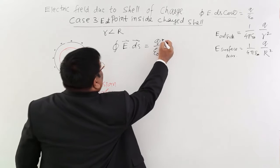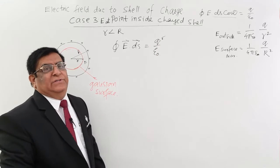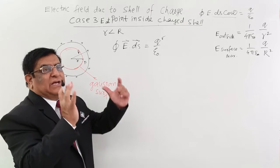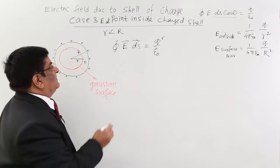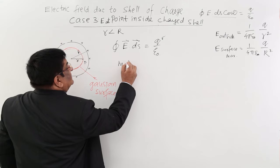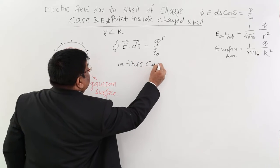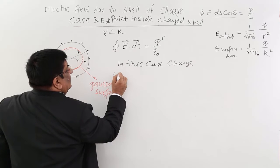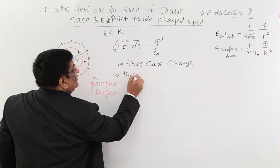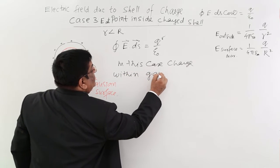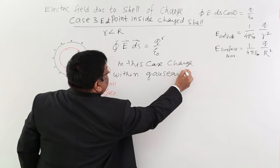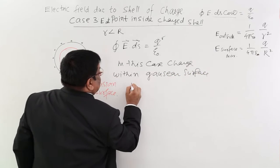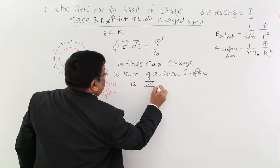What is this q? According to Gauss theorem, this q is the charge inside the Gaussian surface. In this particular case, charge within the Gaussian surface is a big zero.